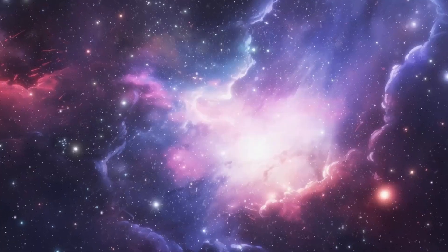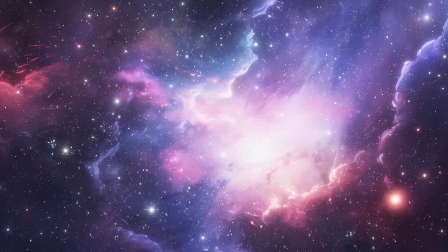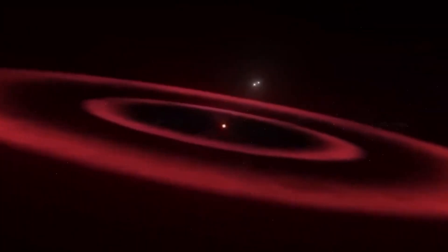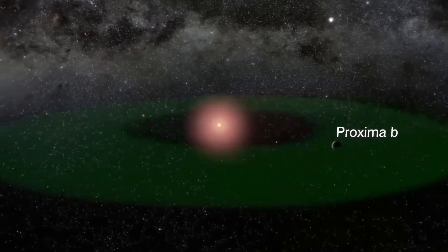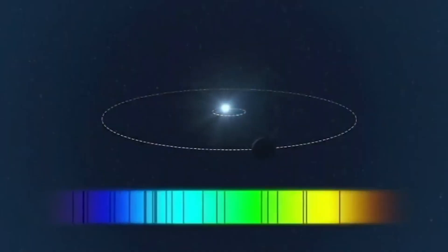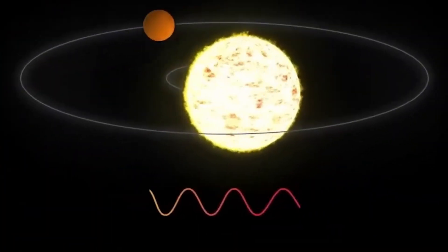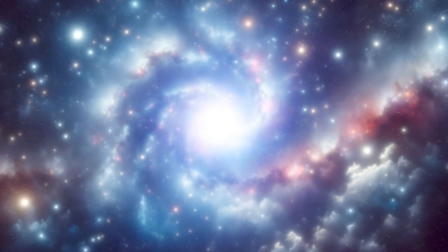Now, 5% might not seem like much, but when dealing with a star that is generally dimmer than our own sun, it's quite significant. If Proxima b has advanced civilizations, they might be using bright orbital mirrors to reflect sunlight from the daytime side to the nighttime side. How cool is that?